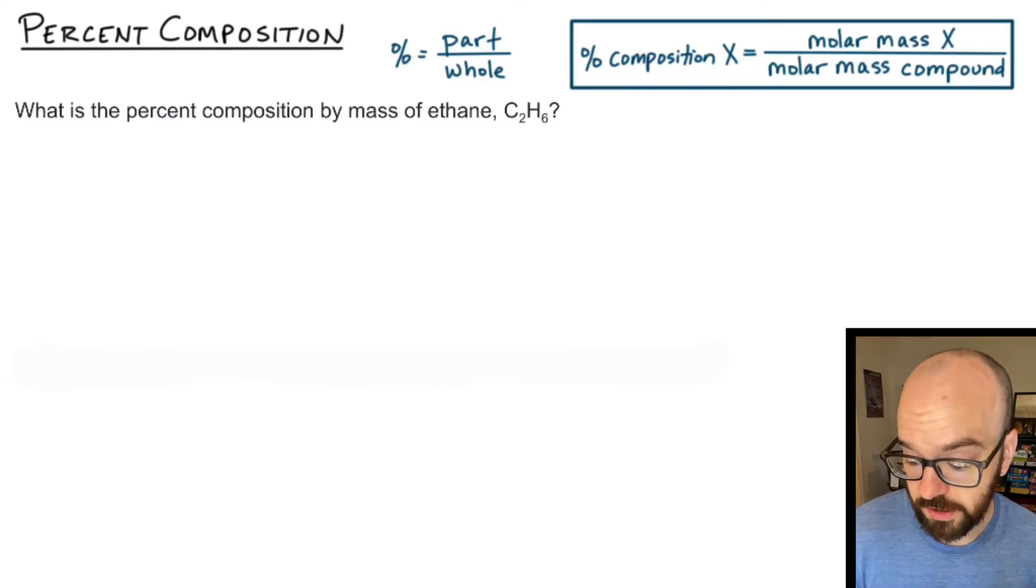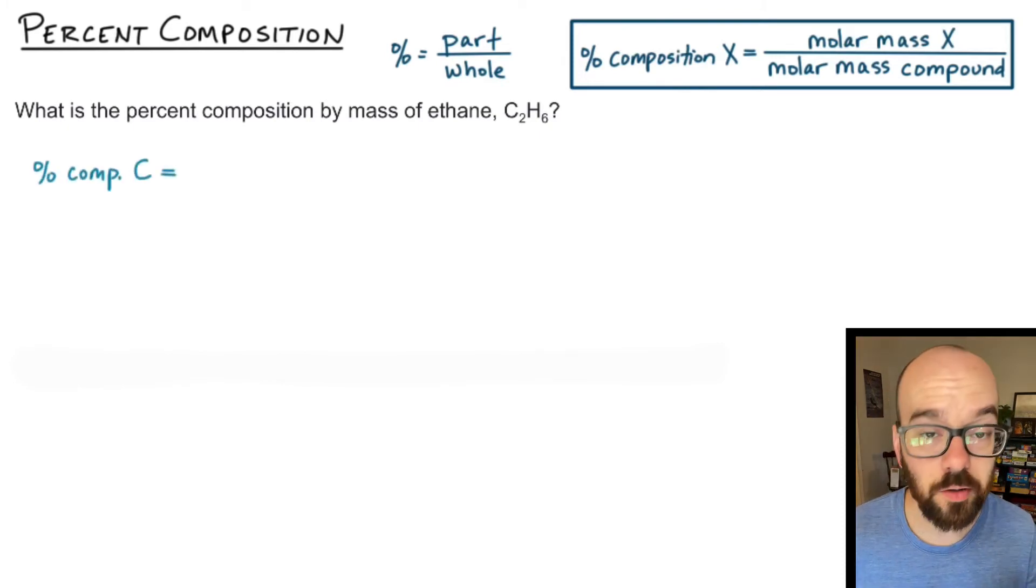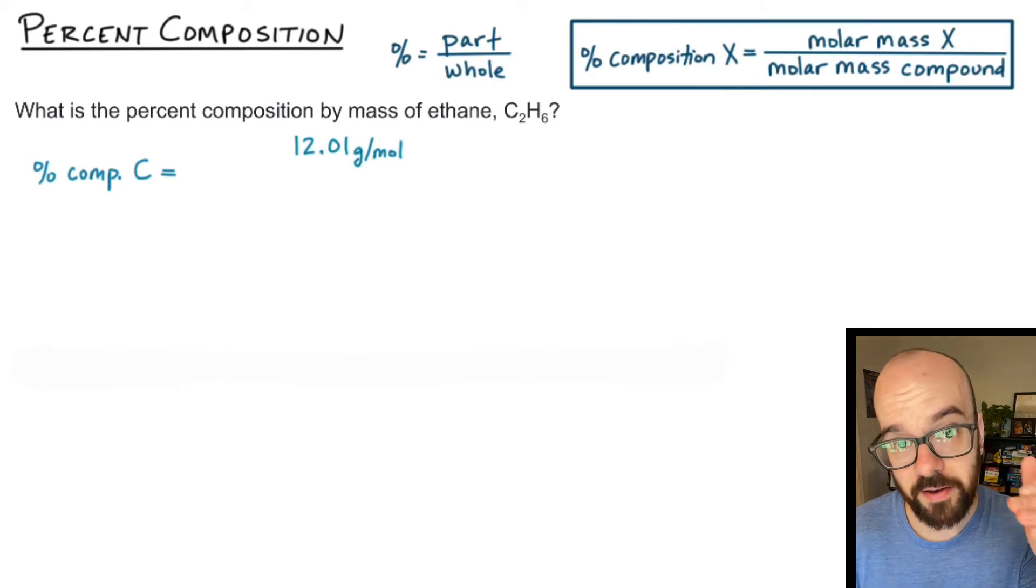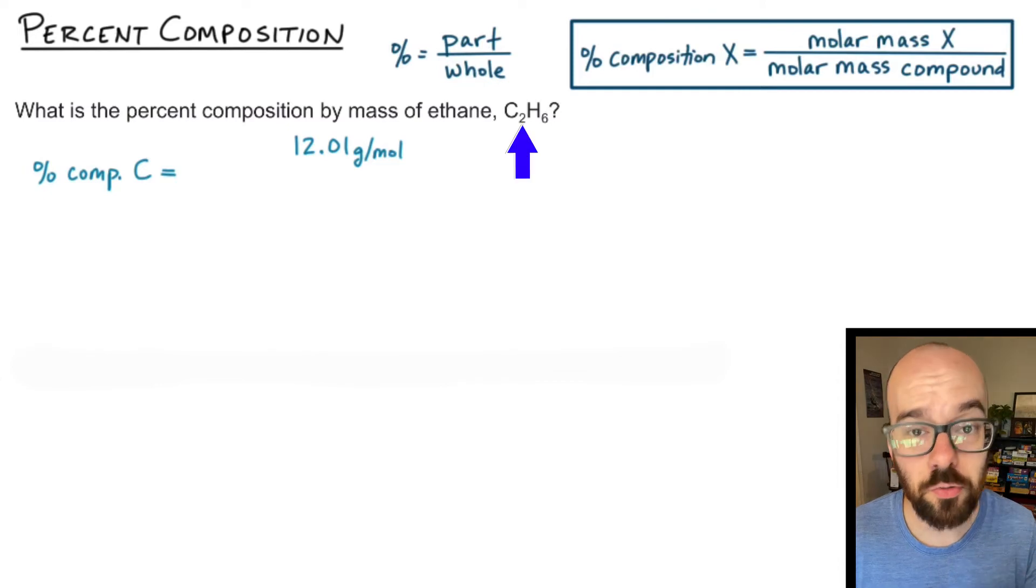The problem says what is the percent composition by mass of ethane C2H6. So we're going to have to do this for carbon and for hydrogen. I'm going to start with carbon. The percent composition of carbon equals the molar mass of carbon, and notice that there's two carbons present in this molecule, so I'm going to multiply that molar mass by two to determine the total mass of carbon in one mole of this compound.